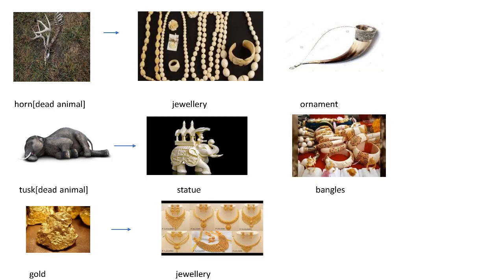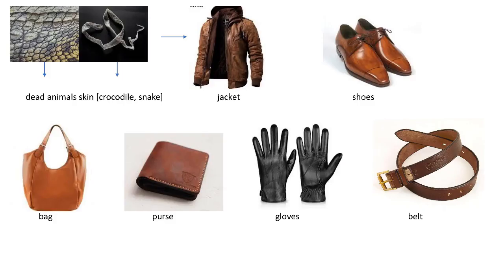We make jewellery from gold. We use dead animal skin to make leather products like jackets, shoes, bags, purses, gloves and belts.